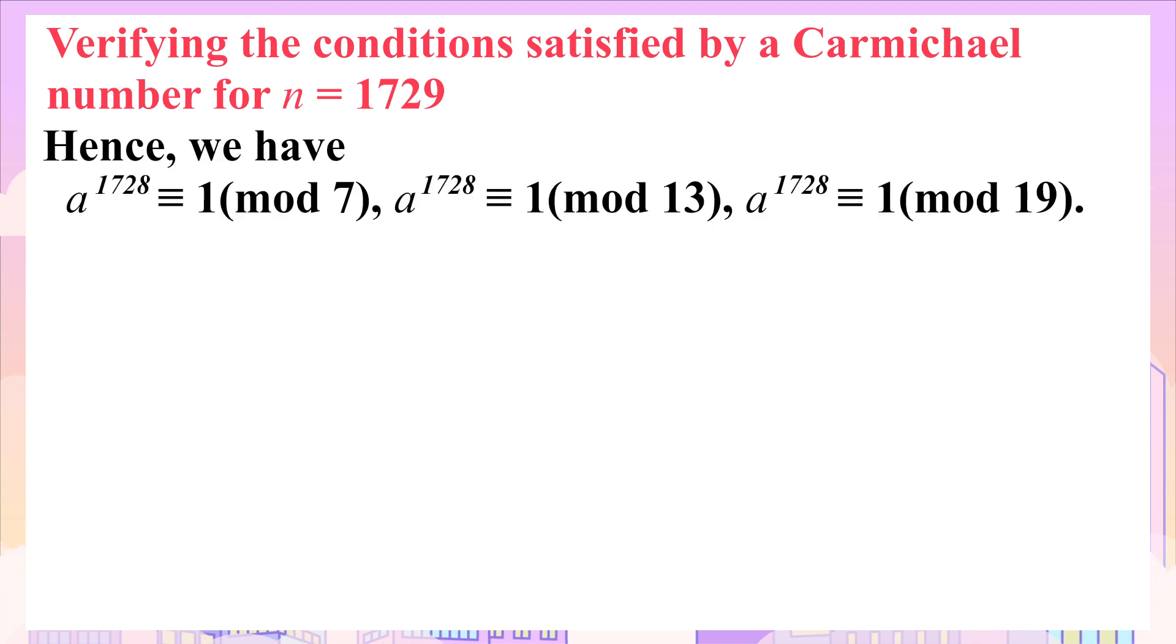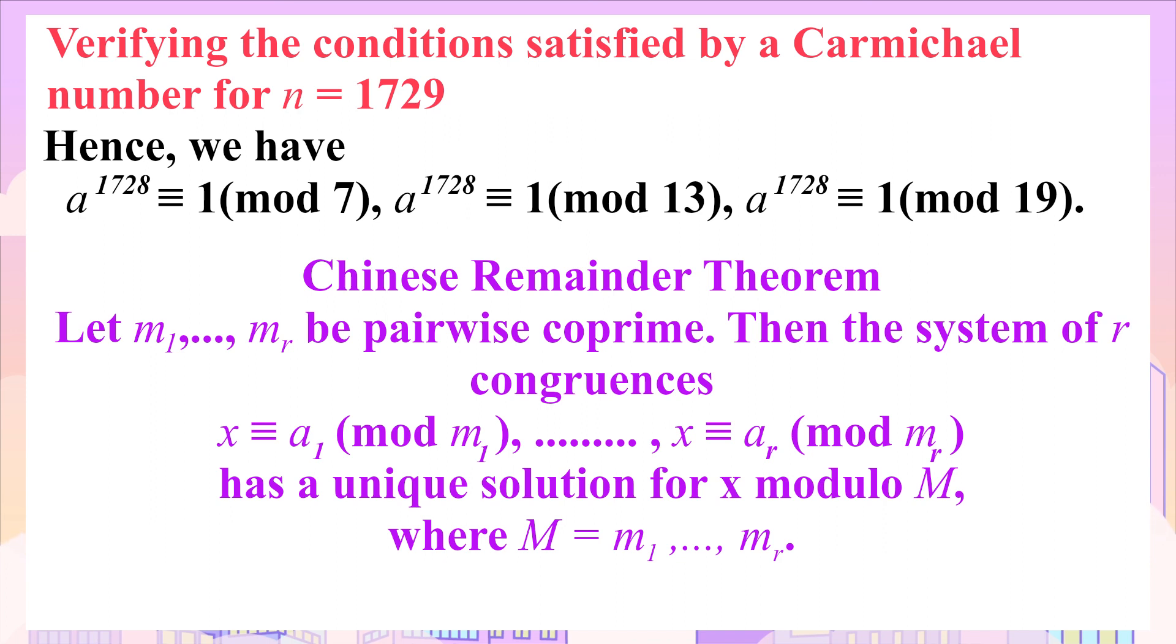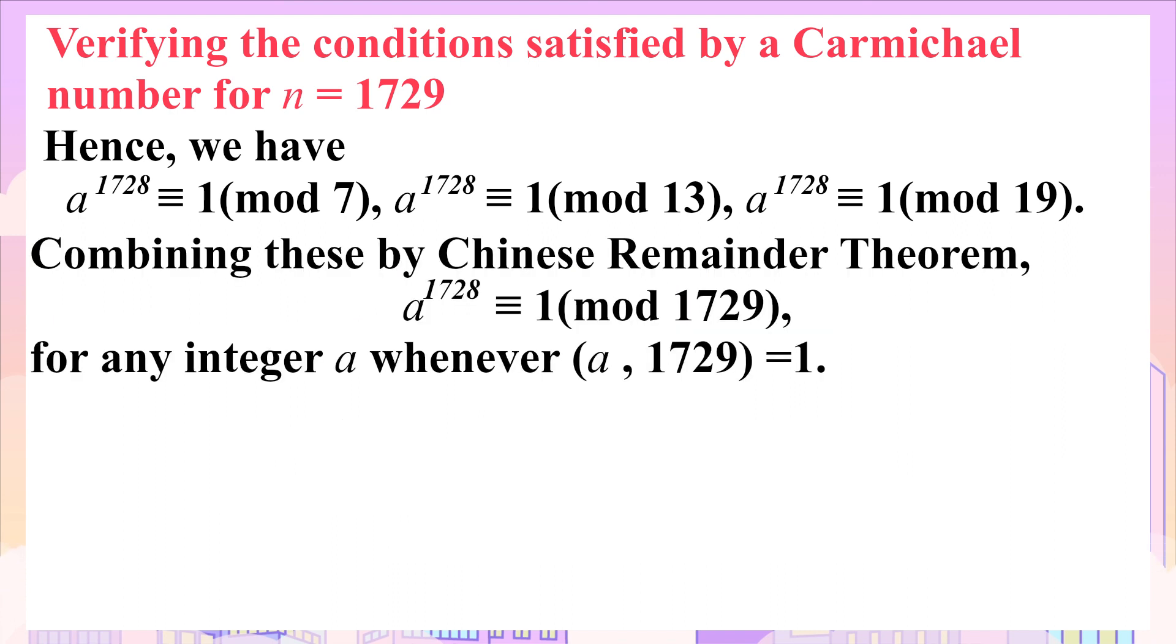Hence, we have the following congruences. Now, we will use the Chinese remainder theorem which states that for r pairwise co-prime positive numbers, the system of r simultaneous congruences has a unique solution for x modulo capital M, which is equal to the product of the r co-prime numbers. Here, we have a system of three congruences, so the solution, that is, a to the power 1728 has a unique solution modulo 7 times 13 times 19, which is 1729. Finally, combining the above congruences by Chinese remainder theorem, a is congruent to 1 modulo 1729. This implies that 1729 satisfies the second condition as well. Hence, 1729 is a Carmichael number.